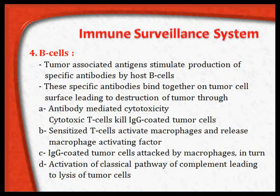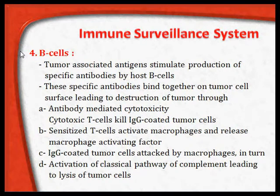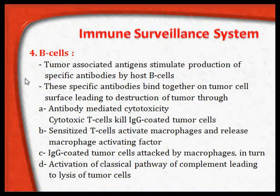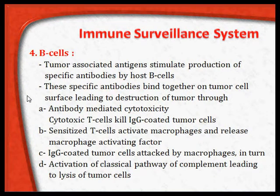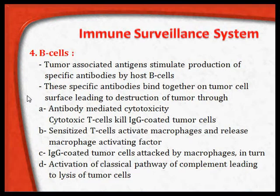In addition to the three mechanisms seen previously, immune surveillance also takes place through our B cells. The tumor-associated antigens stimulate the production of specific antibodies by host B cells. These specific antibodies bind onto the tumor cell surface, leading to the destruction of the tumor. Once the tumor-specific antibodies are attached onto the tumor antigens, cytotoxicity to the tumor cell can occur.